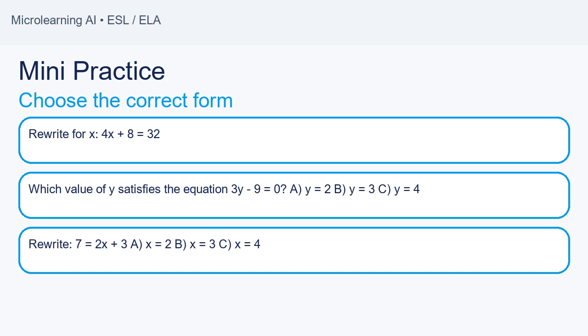Problem 3: Rewrite 7 equals 2x plus 3. A equals 2. B equals 3. C equals 4. Answer: A.